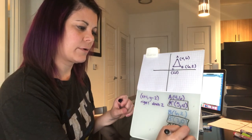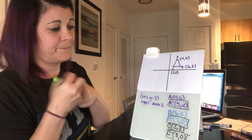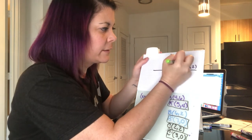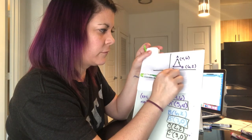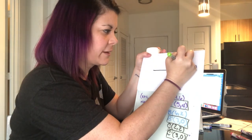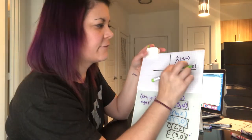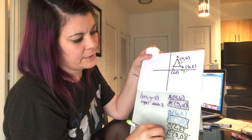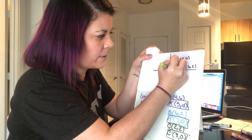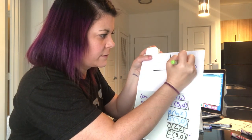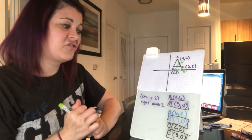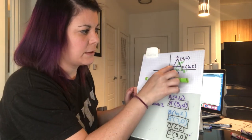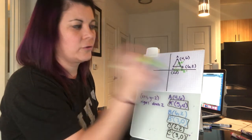Now I graph the image coordinates A', B', C'. A' at (5, 4): over five, up four. B' at (7, 0): over seven, zero. C' at (3, 0): over three, zero. There's our image triangle. Let's verify: A went right one, down two — checks out. B went right one, down two — checks out. C went right one, down two — checks out.